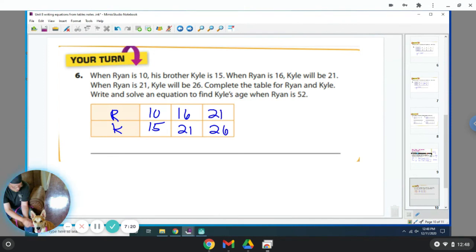So right now, I can tell you, an age has to be an additive relationship. Ages do not depend on a multiplicative. So when Ryan's 10, Kyle's 15. So that's adding 5 every time. So when Ryan's 16, you add 5. That's 21. When Ryan's 21, Kyle's 26. You add 5. So the equation would be y is equal to x plus 5.